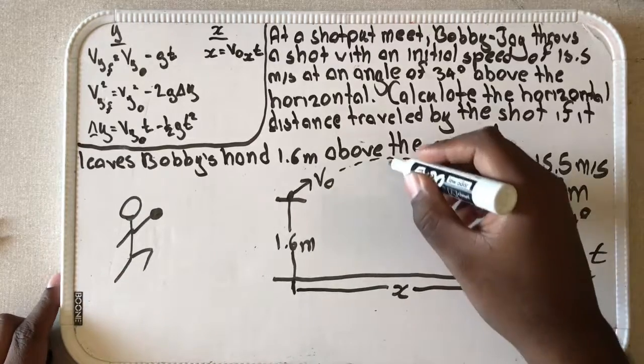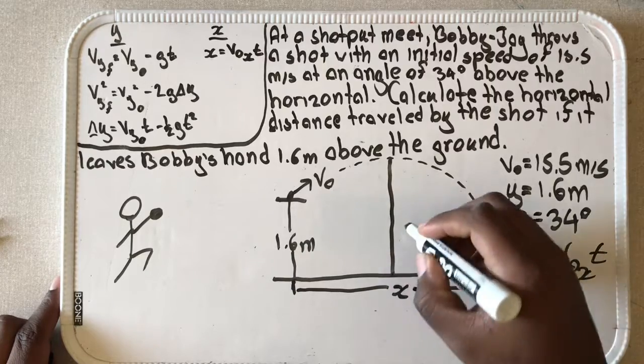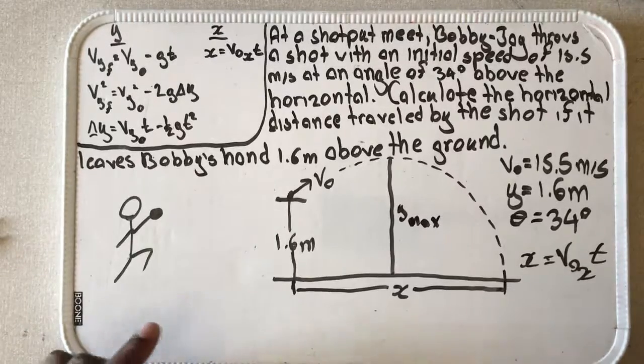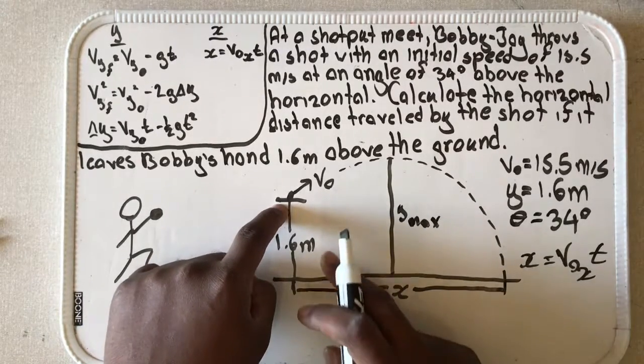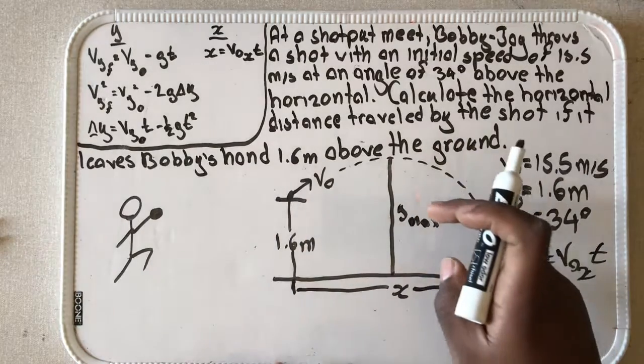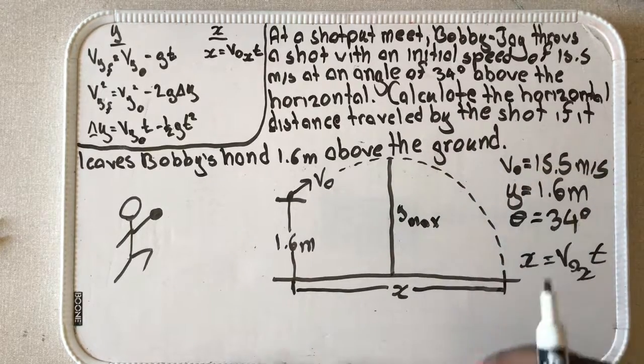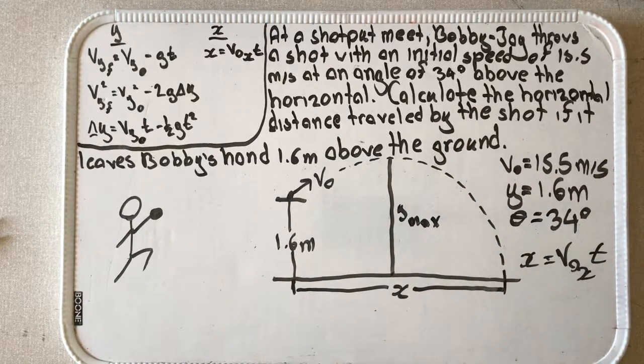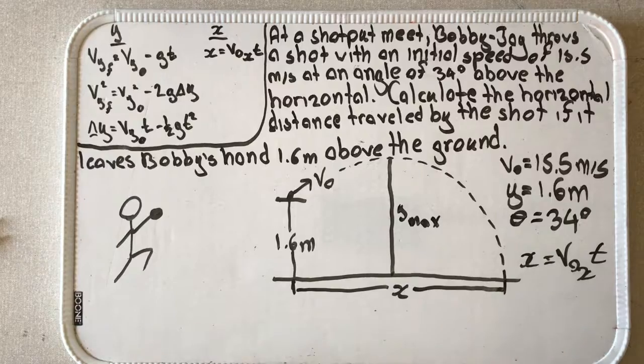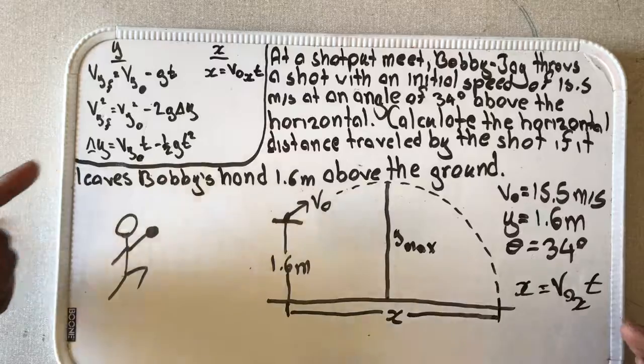If we find the time it takes for this object to go from 1.6 meters above the ground to its maximum height, and then also find the time it takes for this object to fall from its maximum height to the ground, if we add those two times up, that's actually going to give us the total time of flight. And that comes naturally to me. That's what I would do. That's actually how I solve problems before I began to understand this way.